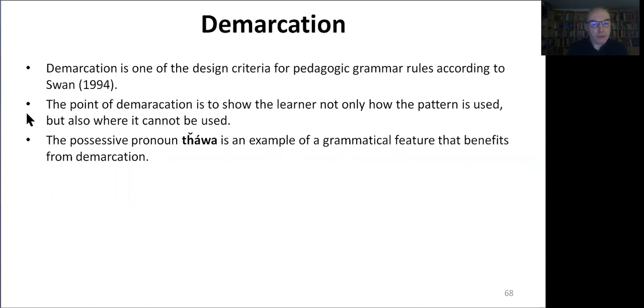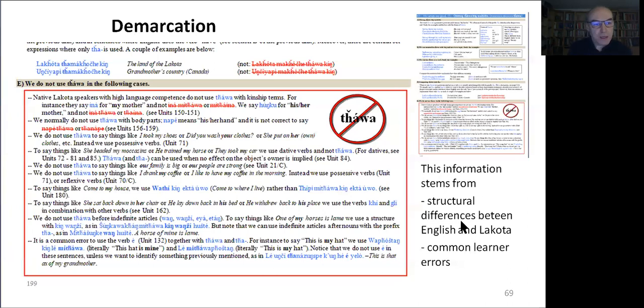The point of demarcation is to show the learner not only how the pattern is used but also where it cannot be used. The possessive pronoun tawa is again a good example of a grammatical feature that benefits from demarcation. So here is an image from the last third of the page that introduces tawa, and this section is devoted to the instances where tawa cannot be used in Lakota. But all of these instances are based on transfer from English, so they emanate from the structural differences between English and Lakota and from the common learner errors that we have collected over the years.